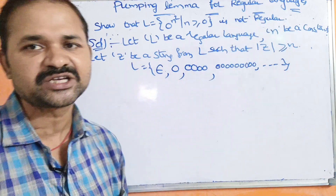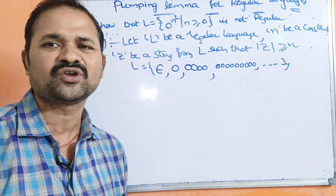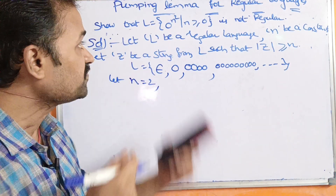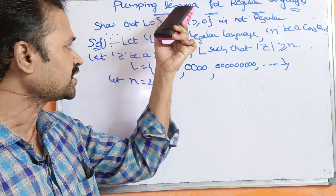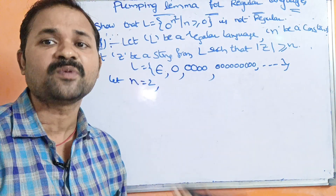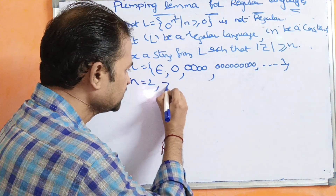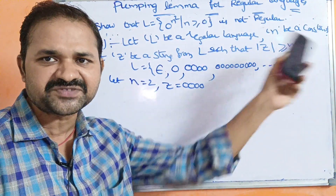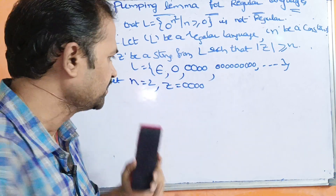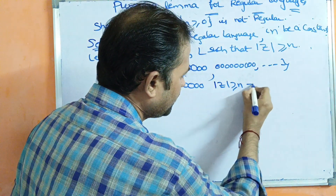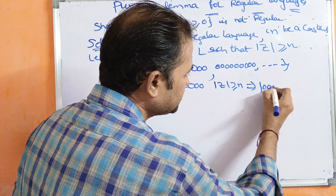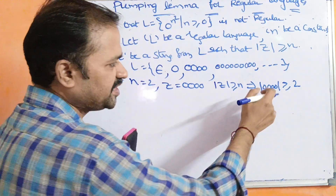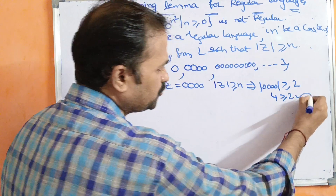From this language we have to assume N — it may be 1, 2, 3, or 4; any value. Here I am assuming N = 2. If N = 2, then the string Z = 0^(2²) = 0^4, which is four zeros. Now check the condition: |Z| ≥ N — that is, 4 ≥ 2, which is true. So our string is correct.